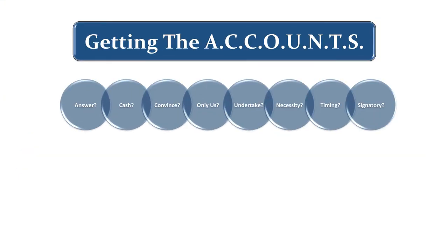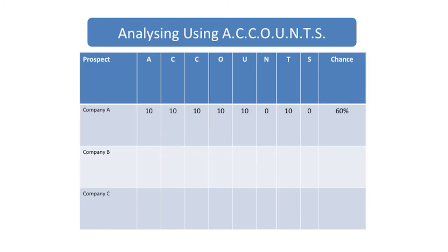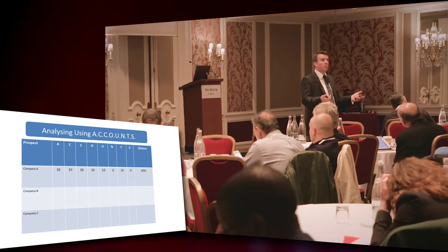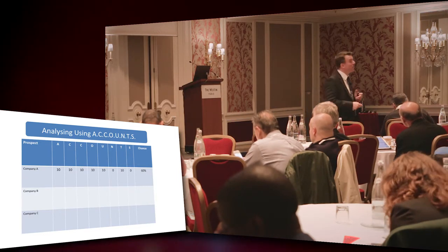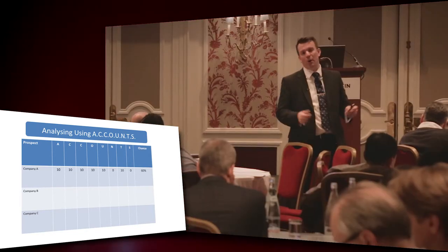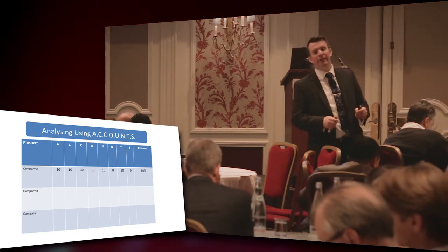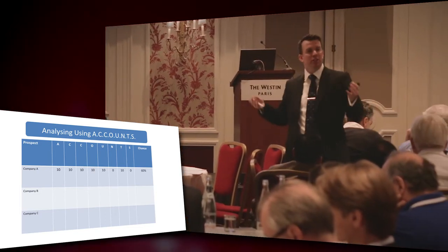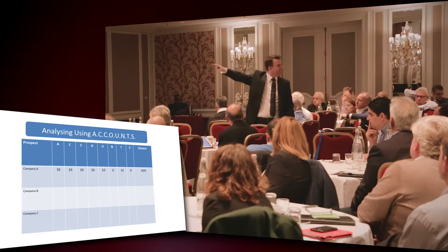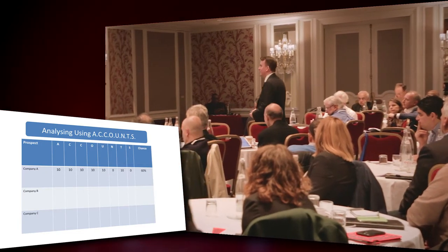That gives us a score. The maximum, if you get all 10s, is 80, which should be interpreted as an 80% likelihood of winning the work. I would have asked you why it doesn't add up to 100. The answer is there's no such thing as a 100% chance of winning the work — there's always a factor we can't control. In Philadelphia, someone pointed out it's simply because there are only 8 letters each worth 10, and suggested making it 10 letters to reach 100. But this is what we use.